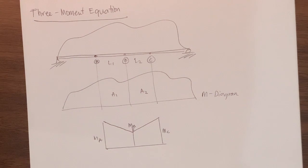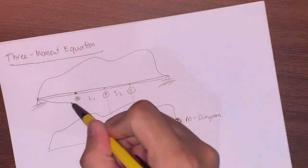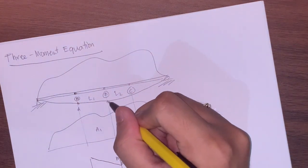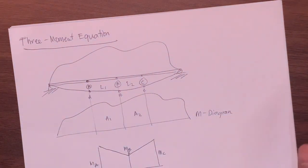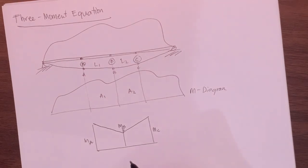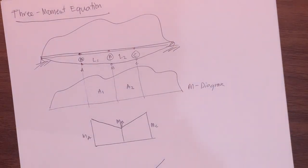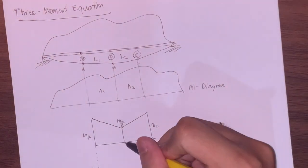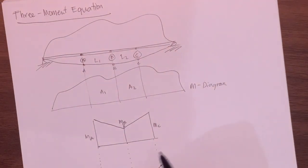To compute the three-moment equation, let's look at the deformation of our beam by drawing the elastic curve. So this is point A, point B, and point C — these are their deformed locations on the elastic curve based on the given load. Let's say point B is somewhere along the elastic curve.